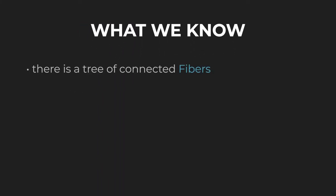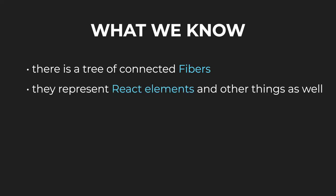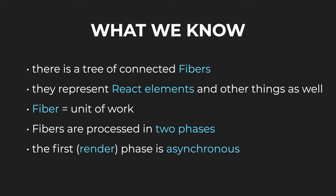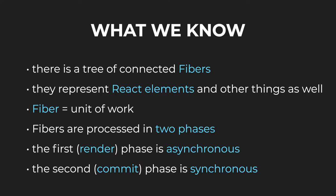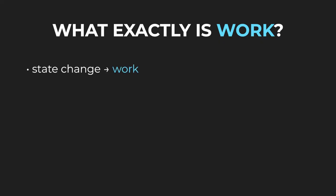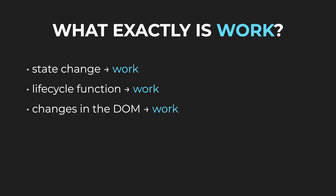There is a tree of connected fibers. They very often represent React elements, but they can also represent other things. Each fiber is a unit of work and React processes them all in two phases. During the render phase, work can be performed asynchronously. During the commit phase, work is performed synchronously and is reflected on the screen. Let's look at what exactly work is. Whenever we change state, that is work. Whenever there is a lifecycle function that has to be called, that is work. Whenever there is an update that leads to changes in the DOM, that is work.